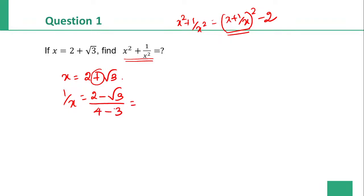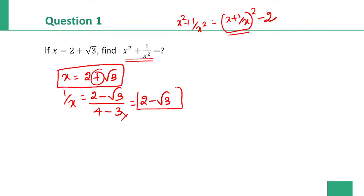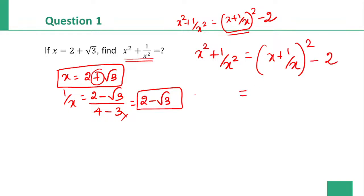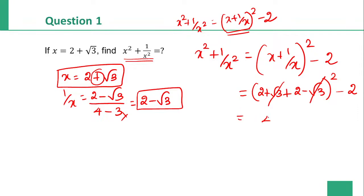x plus 1 by x: x is 2 plus root 3 and 1 by x is 2 minus root 3. So x square plus 1 by x square equals x plus 1 by x, the whole square, minus 2. x value is 2 plus root 3 and 1 by x value is 2 minus root 3. Adding them, root 3 and minus root 3 cancel, giving 2 plus 2 equals 4.